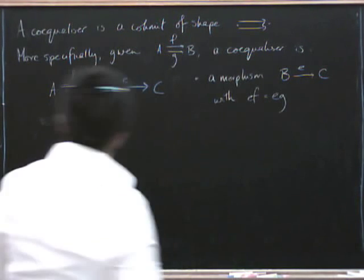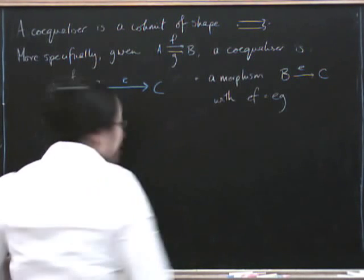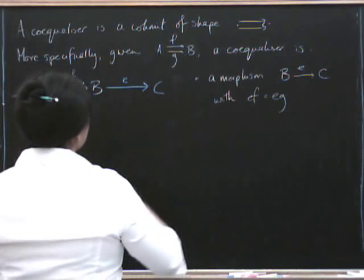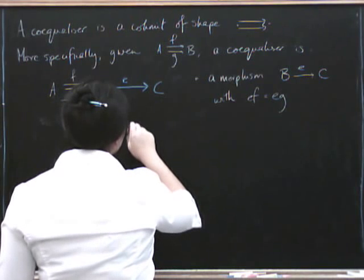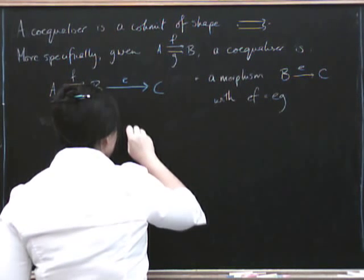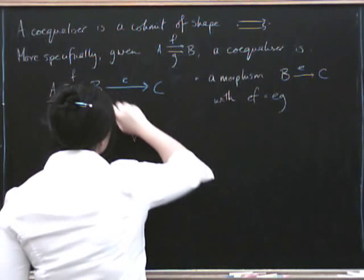And now, of course, we need a universal property. We need this to be the best possible way we could ever have done this. So what we need, this is sometimes called a fork. What we need is, given any other fork, here is another fork, and I'll call this arrow S.